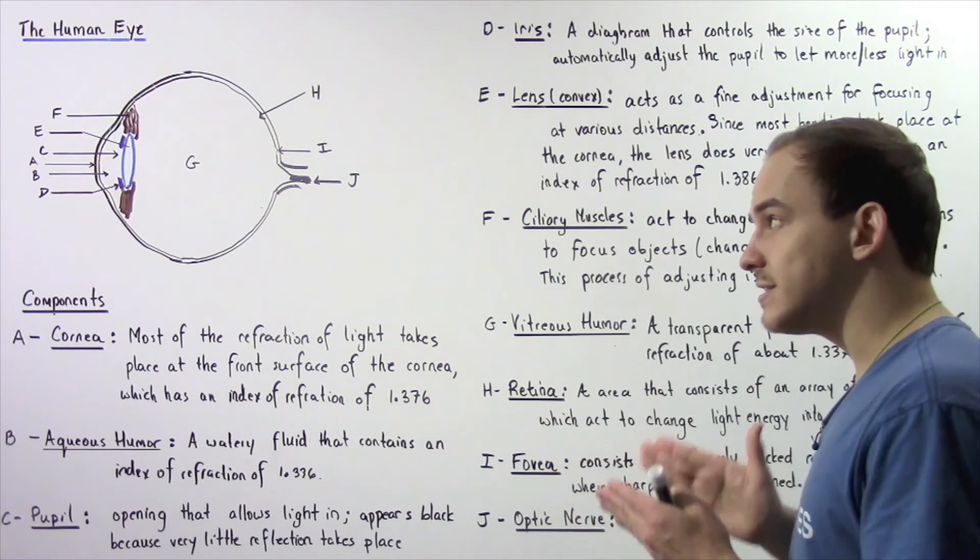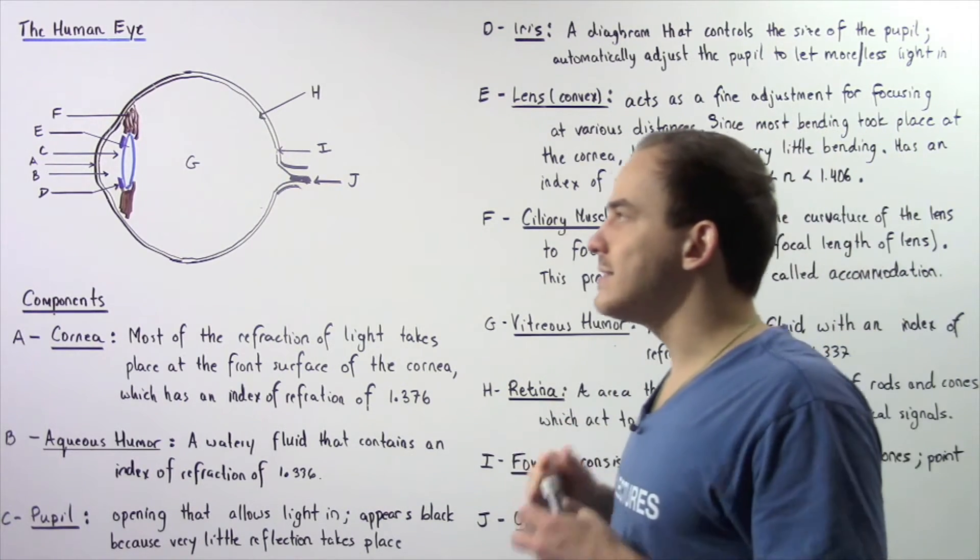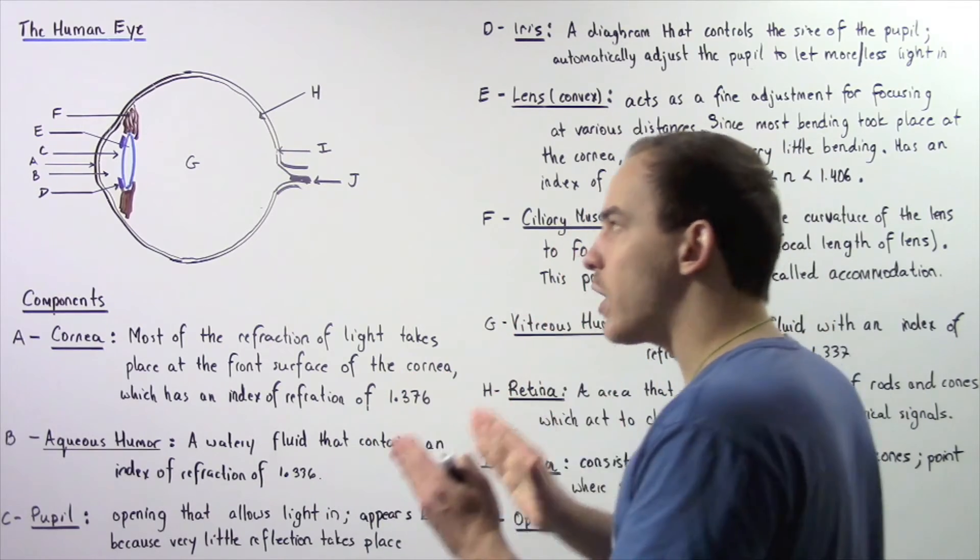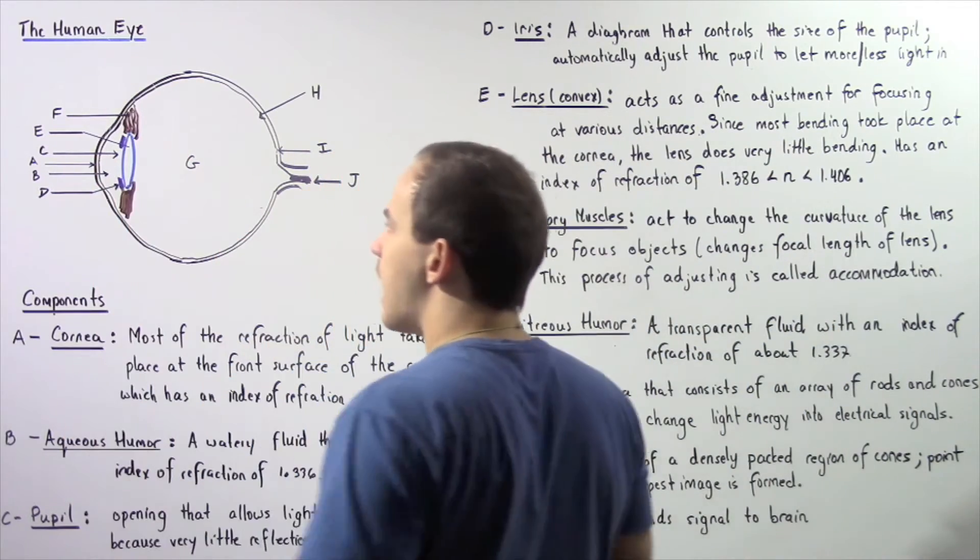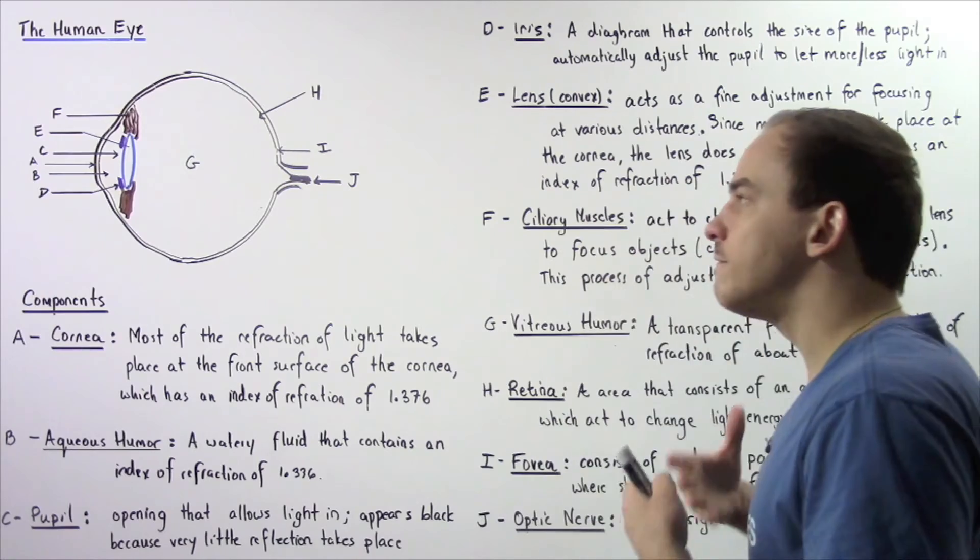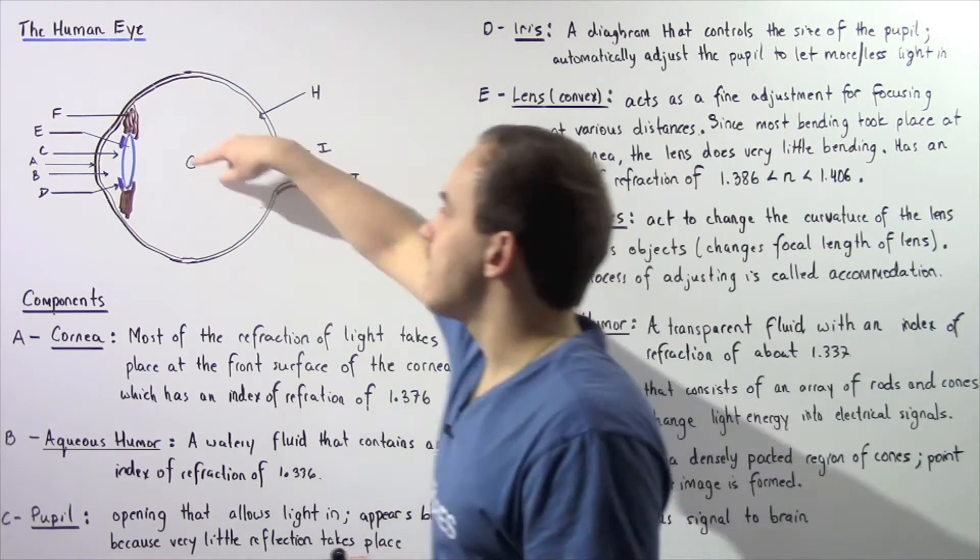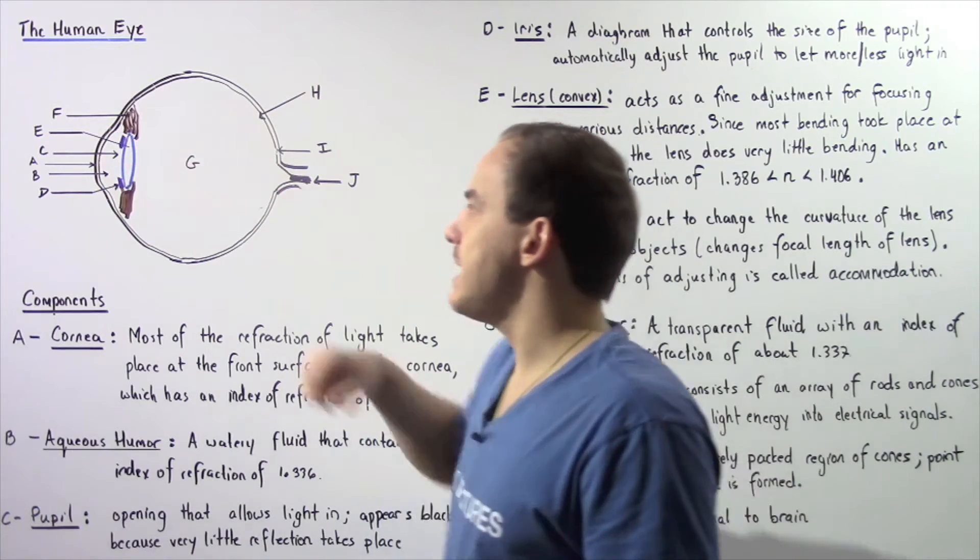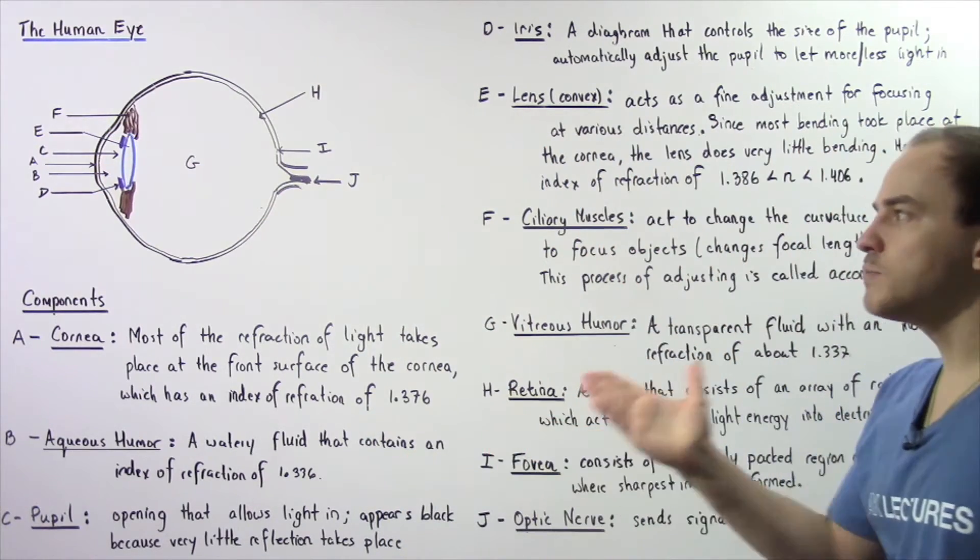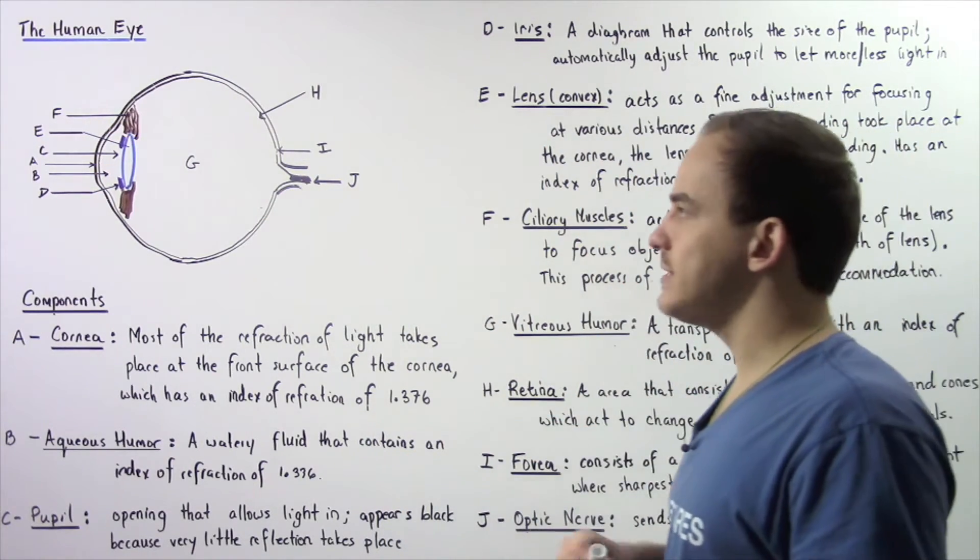The purpose, the function of this section of the eye is essentially to maintain the pressure in this region of the eye, as well as provide food for the various tissues and cells that are found in a neighboring region. Now, let's move on to section C.